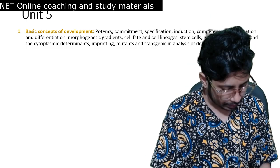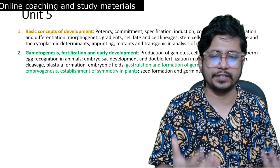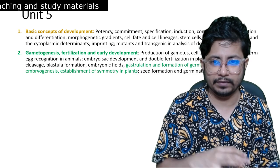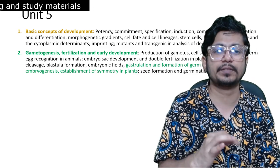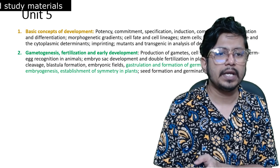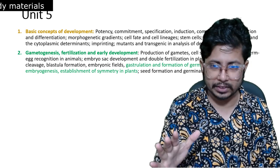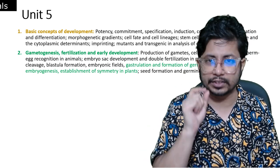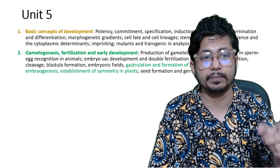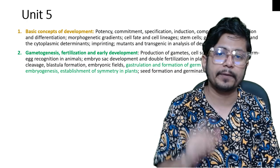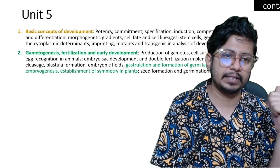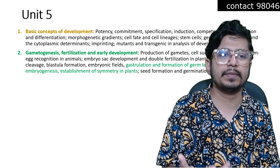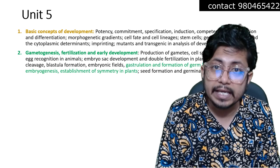Next is gametogenesis, fertilization, and early development - the stages of early development including fertilization in sea urchin, gastrulation and formation of layers in animals, and embryogenesis in plants. Blastula-gastrula transition, zygote formation, and cleavage furrow patterns are also important. This gametogenesis and fertilization portion is really the most important topic. Establishment of symmetry in plants is also equally important.